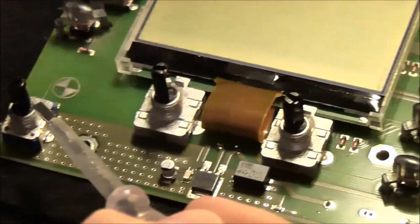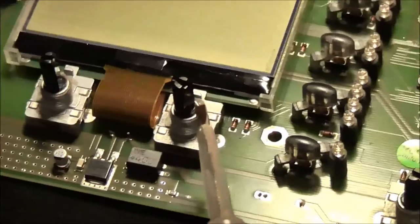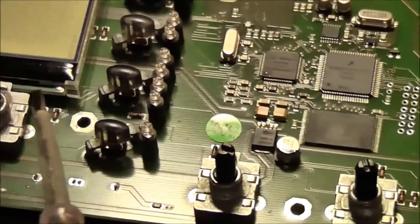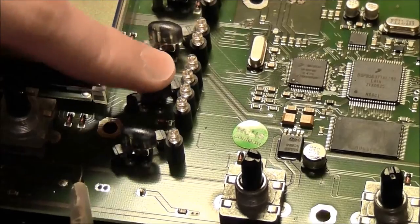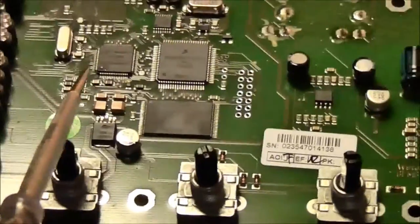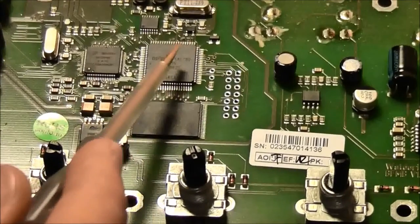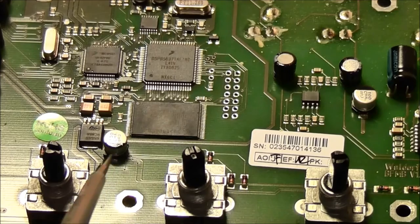On the PCB you have the volume knob. You have the display. Some dirty encoders. You have the buttons with some plastic on it. You have the processors and so on. The memory.